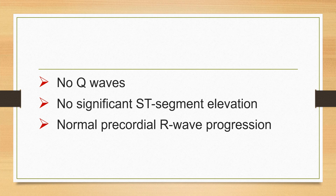On the ECG, there are three additional things to assess apart from the T wave changes. First, there should be no Q waves — if Q waves develop, this suggests anterior wall MI. Second, there should be no significant ST elevation; only minimal ST elevation up to one millimeter can occasionally be raised. Third, there should be normal precordial R wave progression.